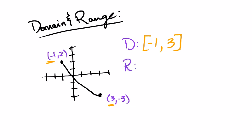The range now looks at the up and down movement on the y axis. So start at the bottom and say, okay, what is the lowest y value it goes to? And that would be negative three. And then the highest y value it goes to would be positive two. So the range can be written that way. And once again, they get brackets because you actually have points there. So let's look at one polynomial that we would maybe see on a quiz or on a test.